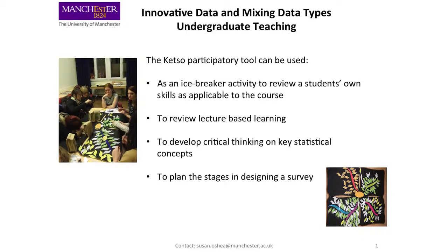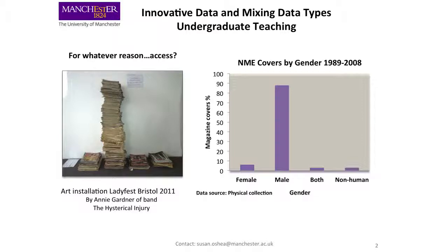For example, we have here a representation of the distribution of gender on the cover of music magazines. Taking that data, gathered from 1989 to 2011 and counting it up, this can then be transformed into a bar chart.